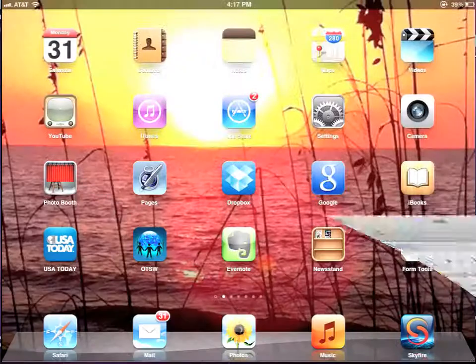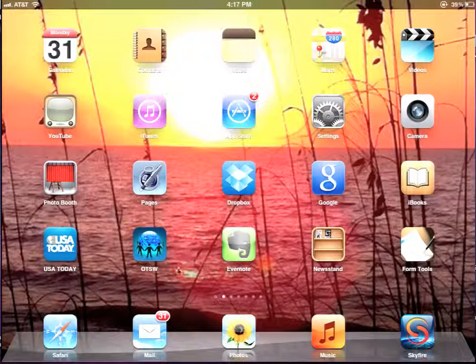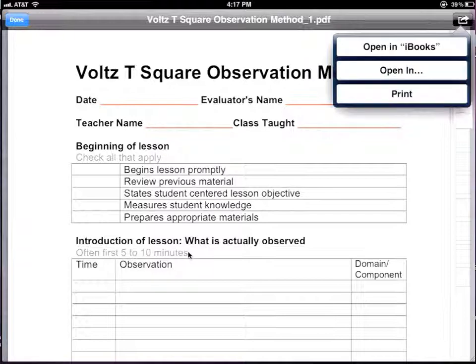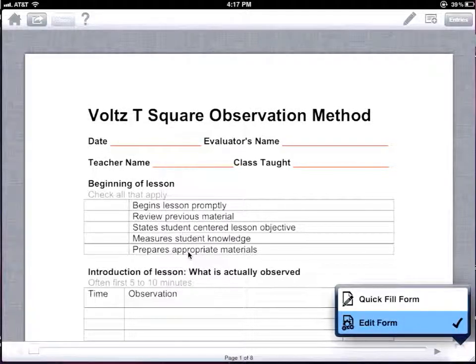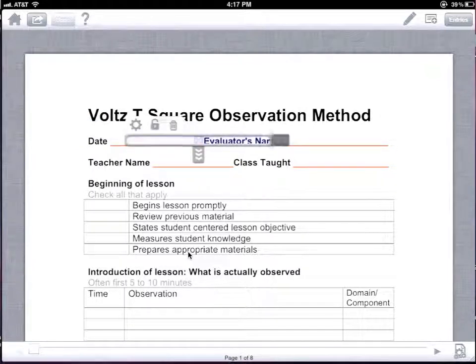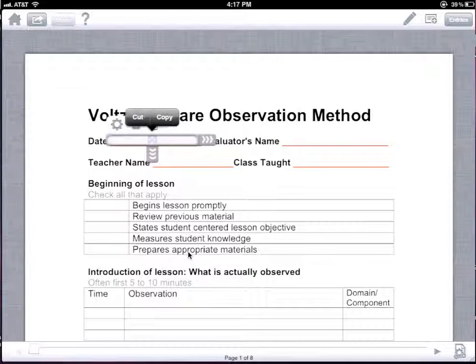We emailed that Voltz T-square document to ourselves. Then we went back to our iPad, opened up our own email, found the email, and opened the PDF document. Up in the right-hand corner, we opened it in Form Tools. After we got it into Form Tools, we went down to the lower right-hand side and edited the form. We clicked where we wanted to enter either text boxes or check boxes and made the form fit our lines.